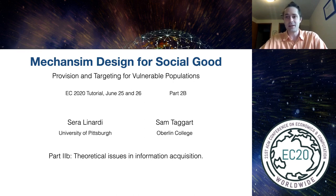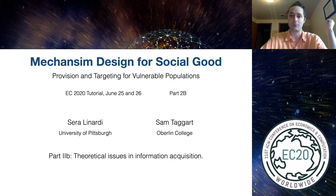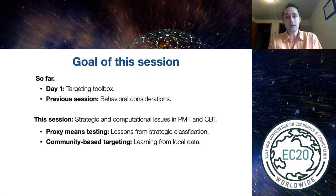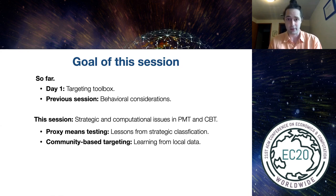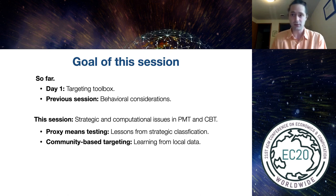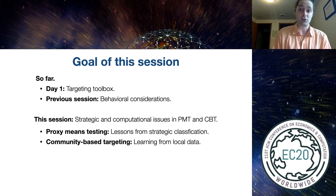Welcome back everyone to the last session of the Mechanism Design for Social Good tutorial on provision and targeting for vulnerable populations. So far on day one we talked about some of the basics of provision and targeting, and then in the previous session we covered some really interesting issues related to behavioral considerations and practical implementation. In this session we're going to talk about some mechanism design and learning issues related to proxy means testing and community-based targeting.